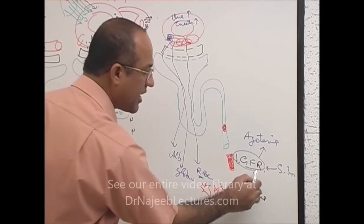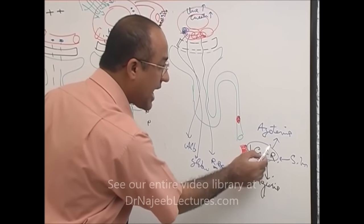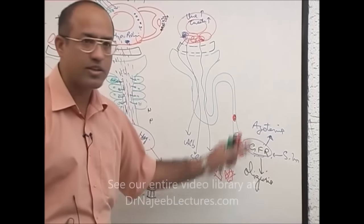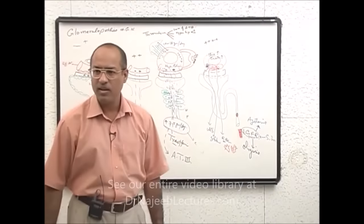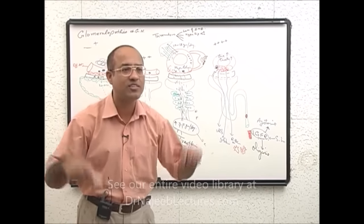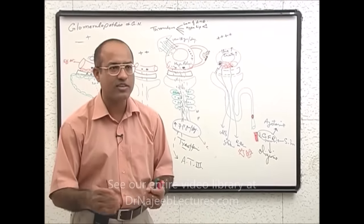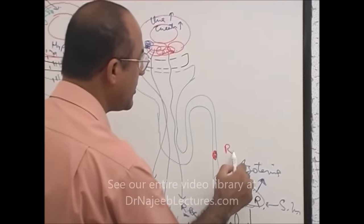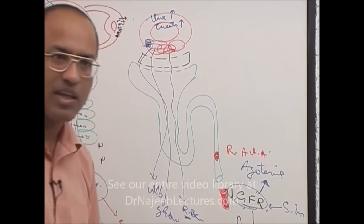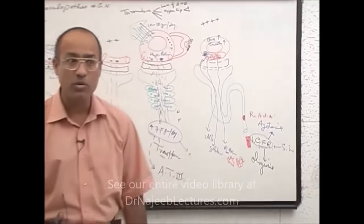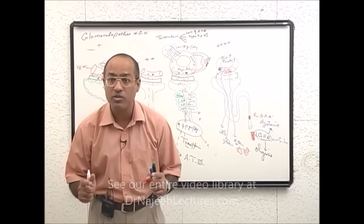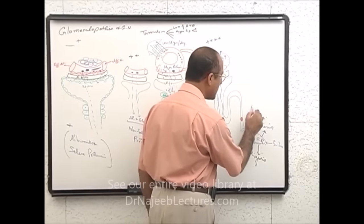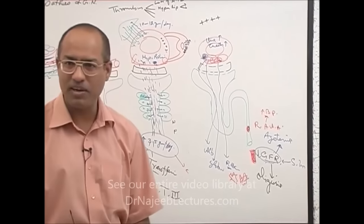Severe inflammation led to reduced GFR, which led to oliguria and less capacity to eliminate waste products — the patient develops azotemia. Blood flow to the kidney is dangerously reduced, so the renin mechanism is powerfully activated. Very powerful stimulation of the renin-angiotensin-aldosterone system retains salt and water. Angiotensin 2 is a most powerful vasoconstrictor, so the patient develops hypertension.